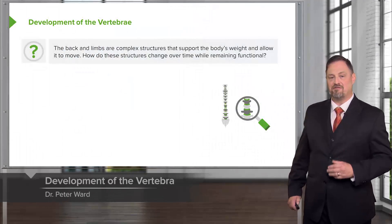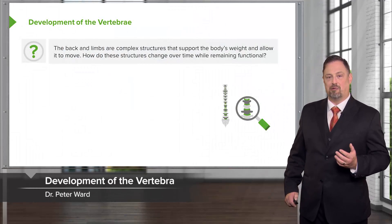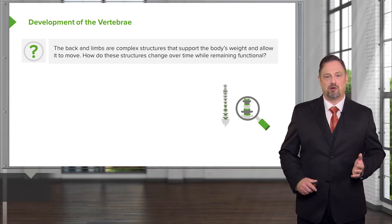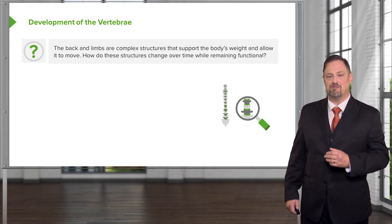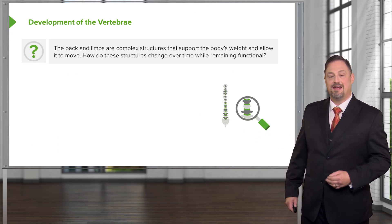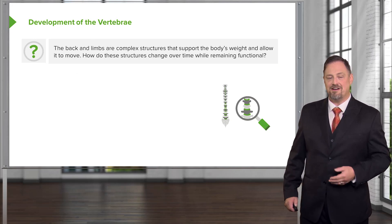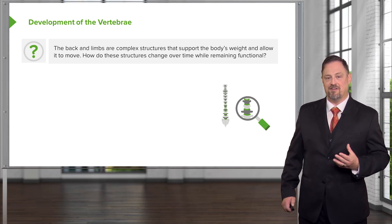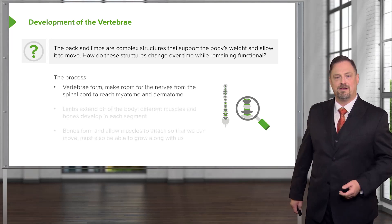The back and limbs are very complicated structures. They support the body's weight and protect the spinal cord, but also have to allow movement to occur. And if that weren't challenging enough, these structures have to change during development to allow growth.